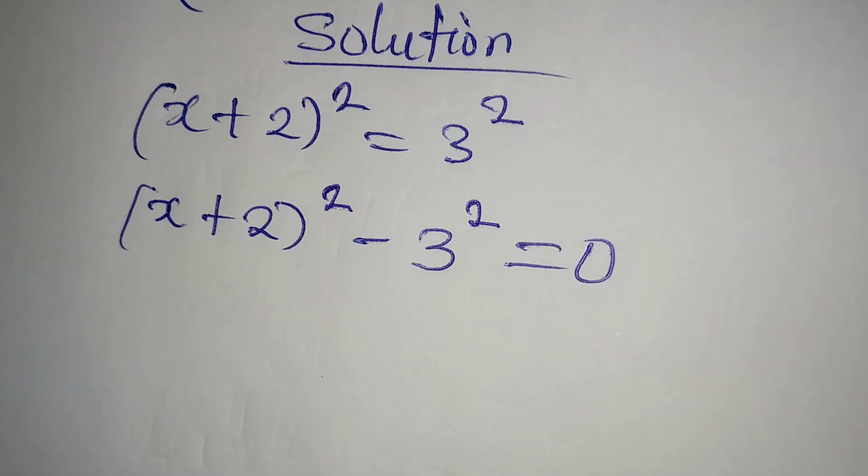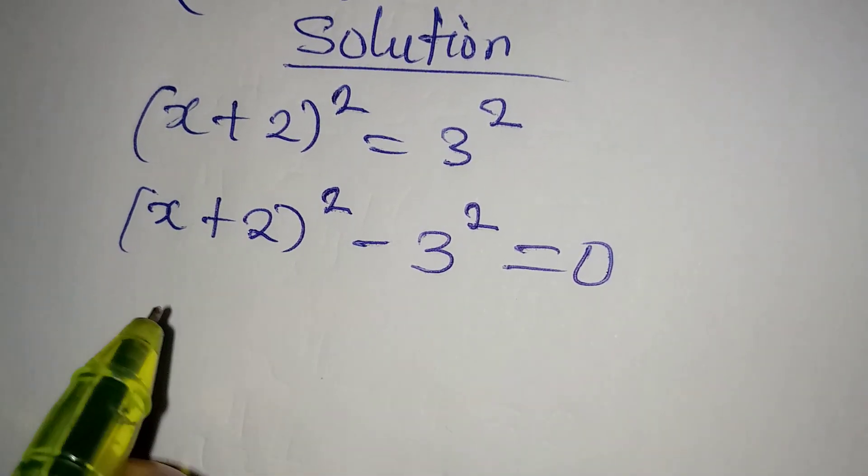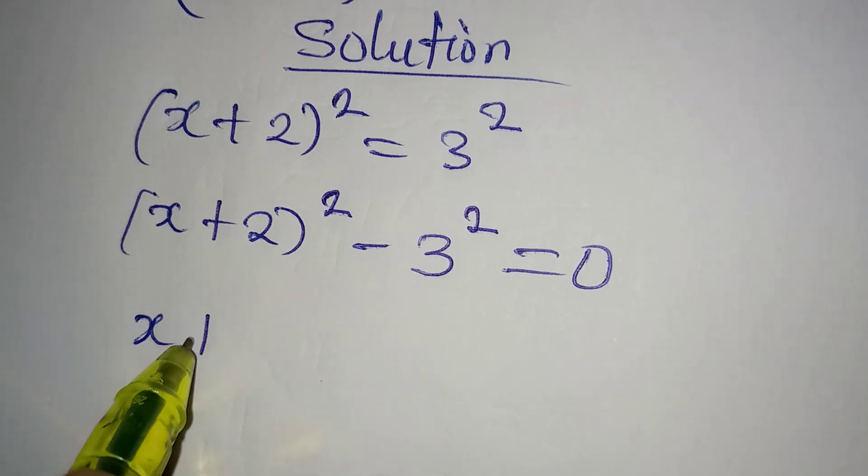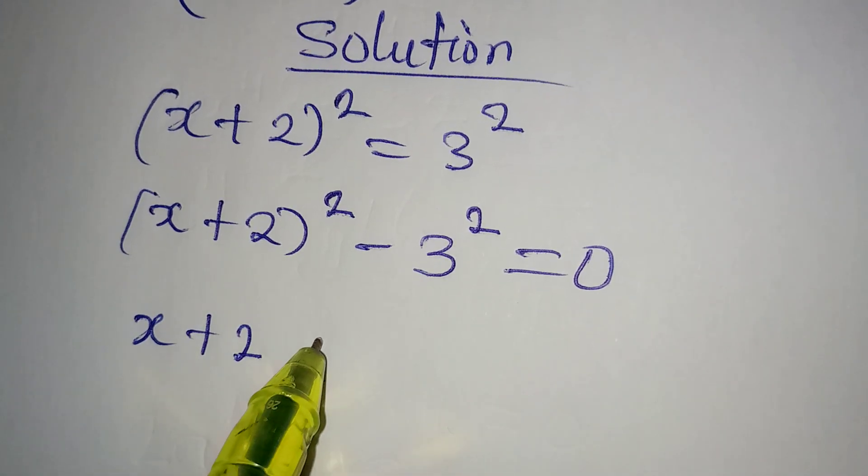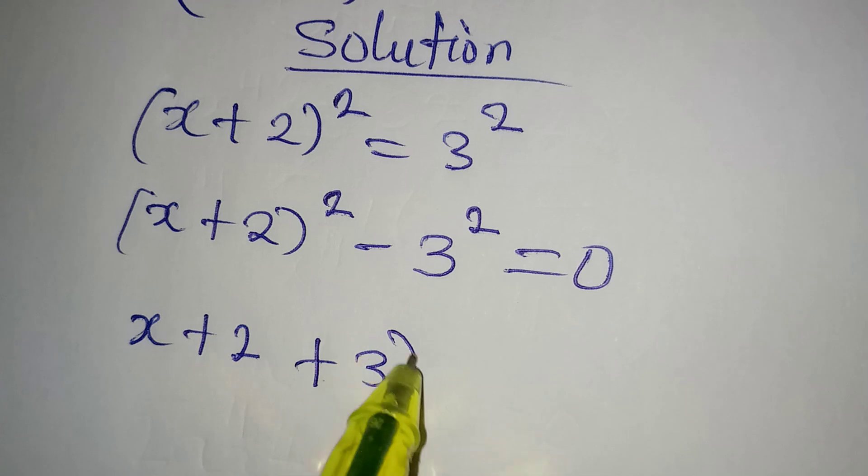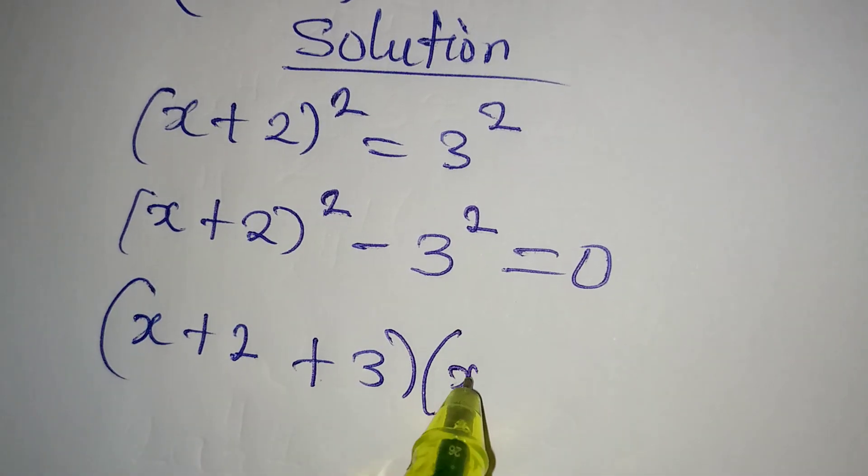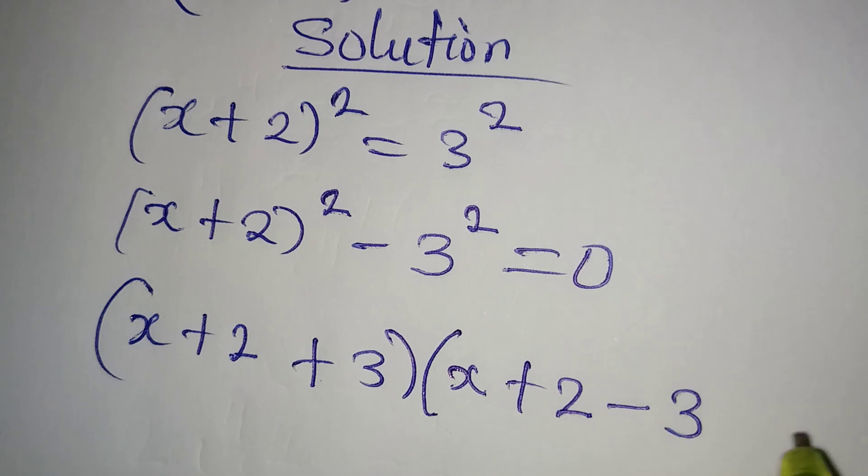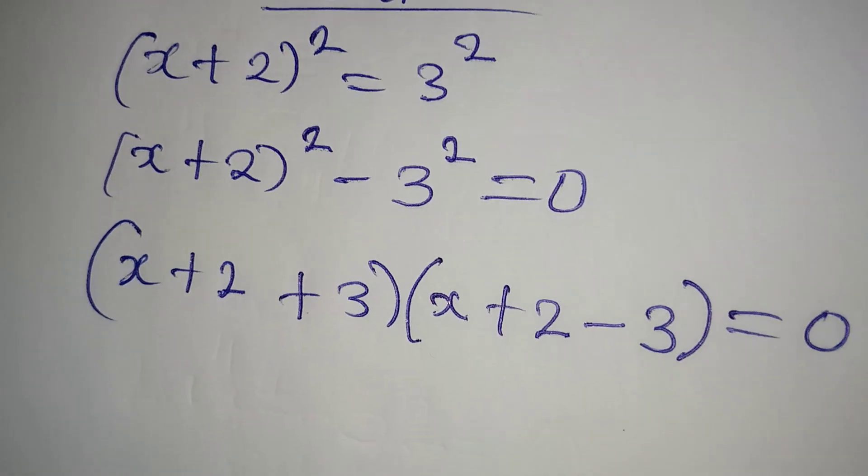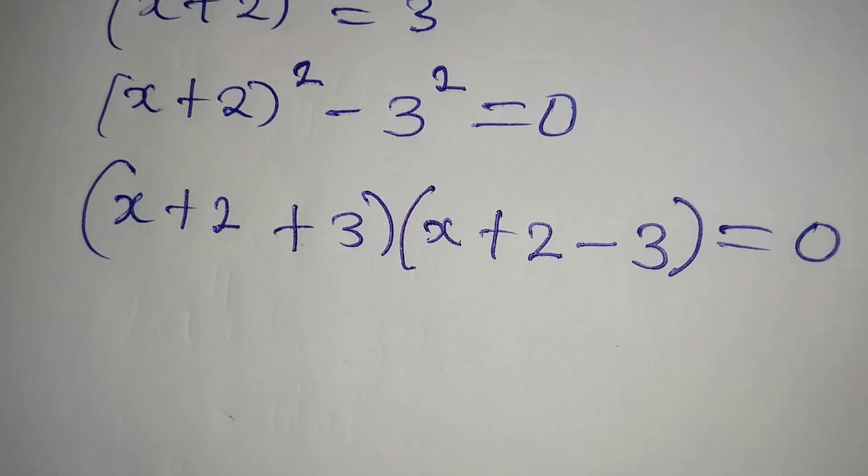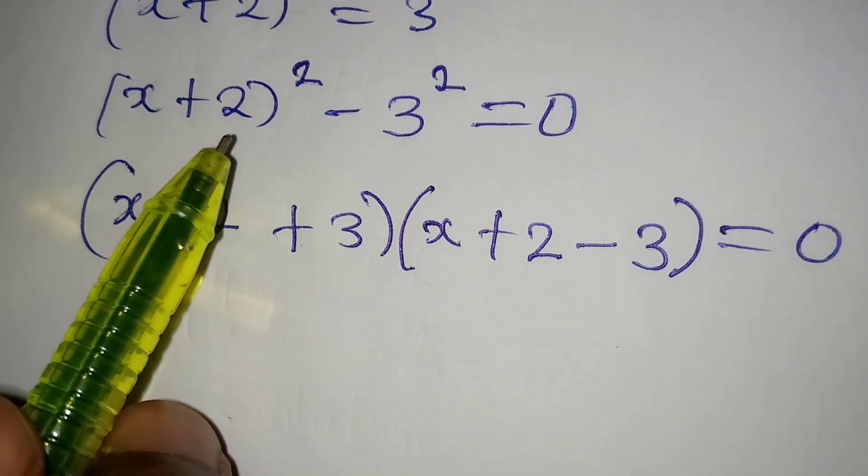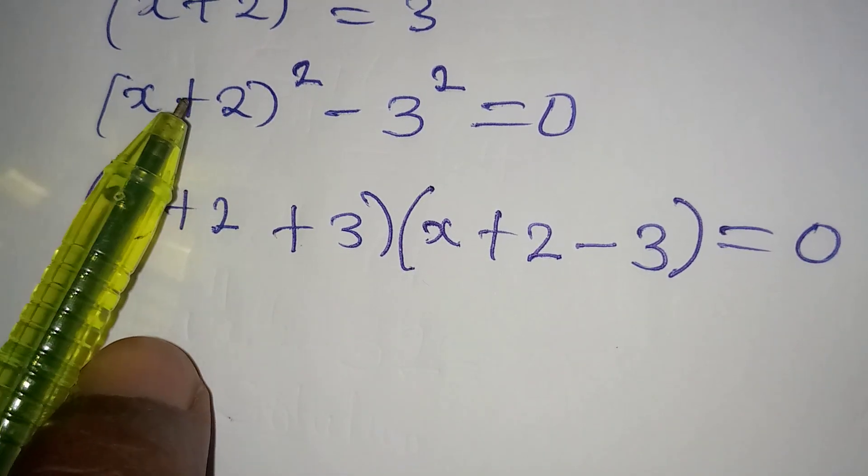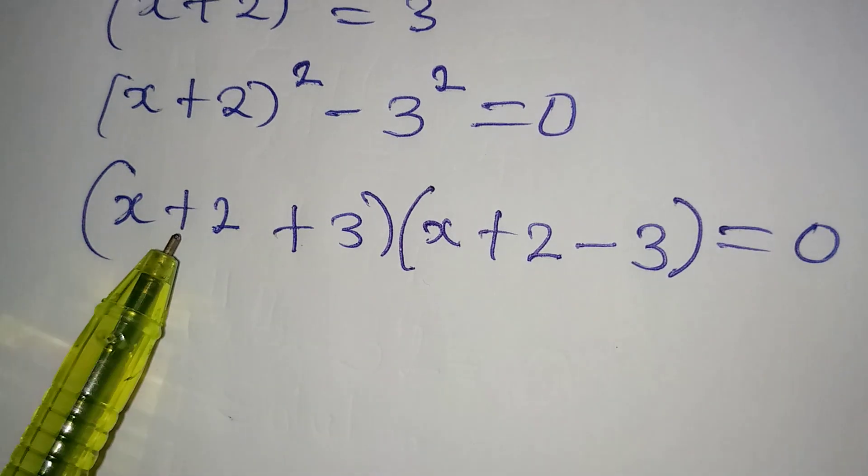And now if I apply difference of two squares, what do I have? I will be having x plus 2 then plus 3 into x plus 2 minus 3 is equal to 0. Now what have I done?